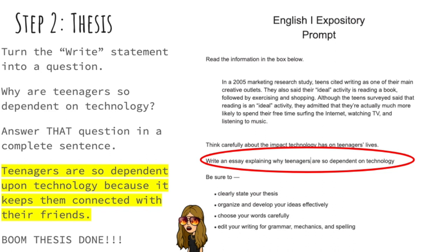One of the best ways to write your thesis is to take your write statement and turn it into a question. Our write statement says: write an essay explaining why teenagers are so dependent on technology. So we turn that into: why are teenagers so dependent on technology? Then just answer that question in a complete sentence: teenagers are so dependent upon technology because it keeps them connected with their friends. That's your thesis. Go ahead, pause the video, turn your prompt into a question and answer it.